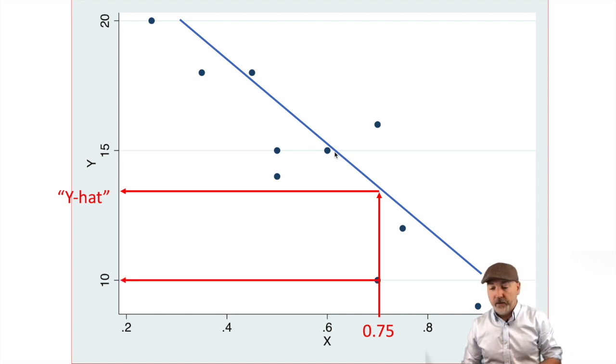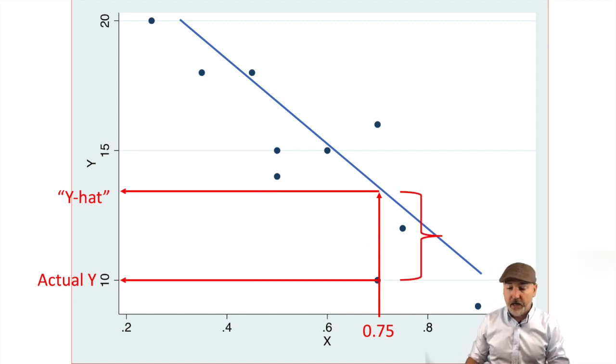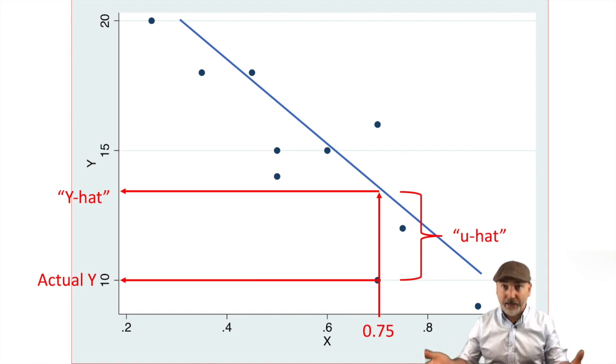Going back to our little plot, for that observation when x was equal to 0.75, our model predicts a value up here and here's the actual value here. So the gap between them, the y-hat and the actual y, that distance, that's what we're calculating. That's the model error or residual, that's the u-hat.